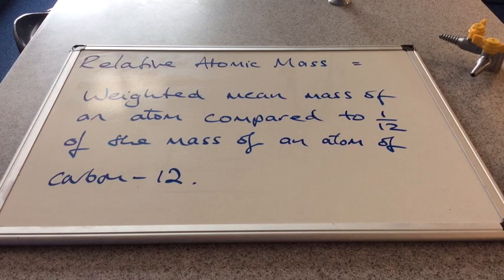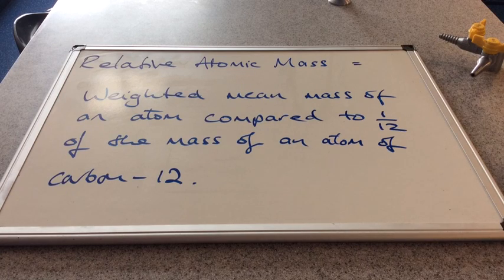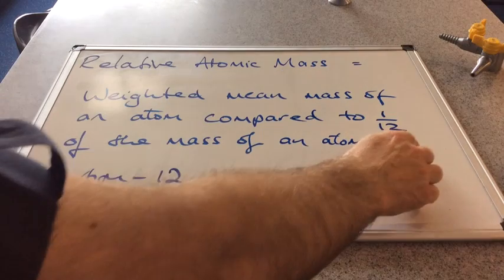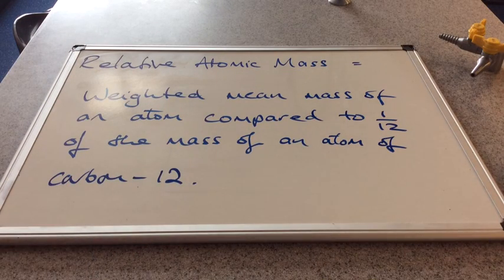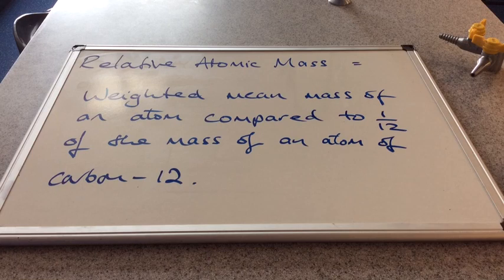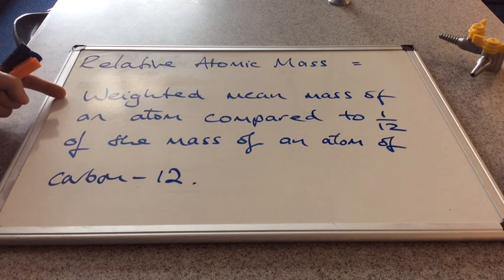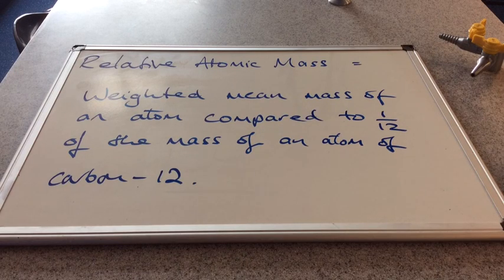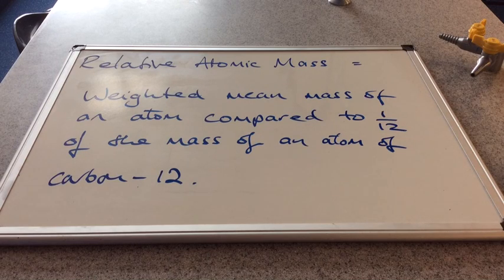You might be wondering where I'm going with this, but hopefully when we get to the definitions you'll see the point of this board. If the mass of one atom of carbon-12 is 12 atomic mass units, that means a twelfth of carbon-12 is going to be one atomic mass unit. And now we're in a position to look at the definition of relative atomic mass. That's defined as the weighted mean mass of an atom compared to one twelfth of the mass of an atom of carbon-12.